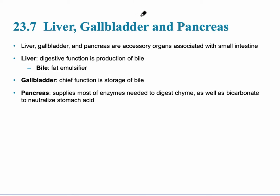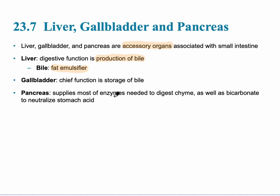The liver, gallbladder, and pancreas are accessory organs that are specifically associated with the small intestine. The liver has a primary digestive function of producing bile, but it also does many other things, including a large amount of metabolic pathways. Bile itself is what's called a fat emulsifier — a detergent-like molecule that helps to act primarily on fat.